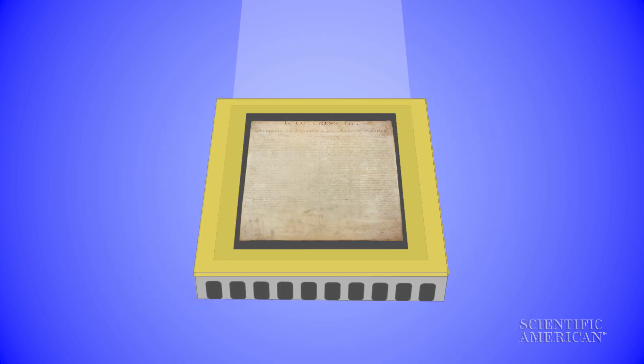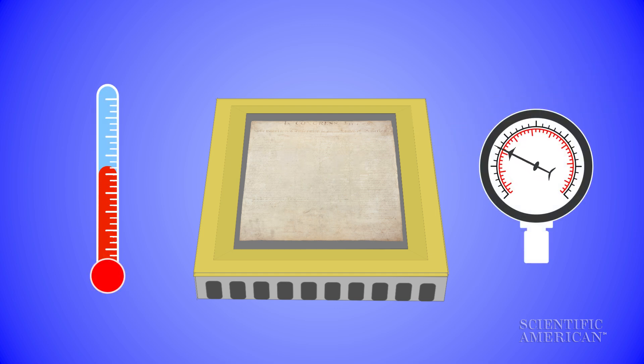A double-layered piece of tempered glass with an anti-reflective coating is suspended over the document. It's not bulletproof, sorry Nick Cage, but is strong enough to withstand changes in temperature and barometric pressure.